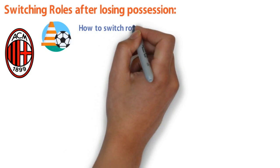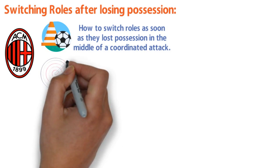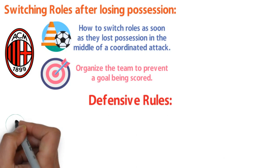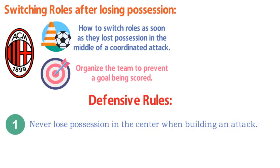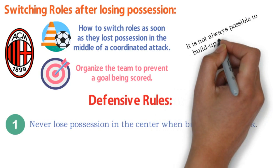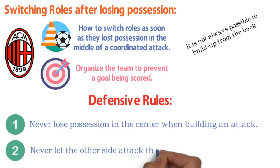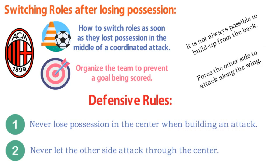At AC Milan, players constantly practiced how to switch roles as soon as they lost possession in the middle of a coordinated attack. It is basically about organizing the team to prevent a goal being scored. When you are in possession, it is less about organization and there is more space for intuitive play. Two defensive rules were the basic creed at AC Milan. The first rule: never lose possession in the center when building an attack. The second rule: never let the other side attack through the center. Players have to force the other side to attack along the wing, because there they have more chance of closing down a player and regaining possession by using the touchline like an extra defender.